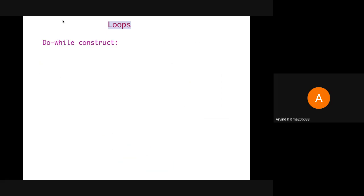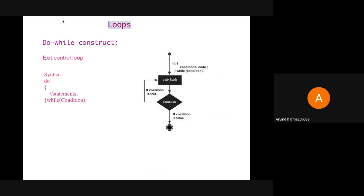Next is the do-while construct. It is an exit control loop, unlike the other two loops where the condition is checked first before execution. Here the loop execution starts first, then the condition gets checked. The syntax is: we use the keyword do and a block of statements below it, followed by the keyword while and a condition within parentheses, with a semicolon after the condition. As shown in the flowchart, first the code gets executed, then the condition is checked. Even if the condition is false, the code would get executed at least once.